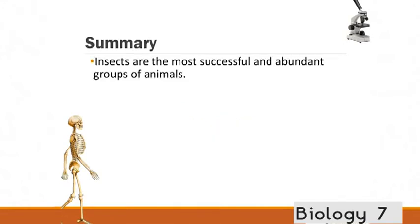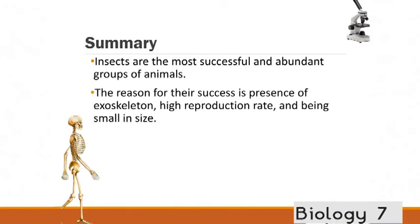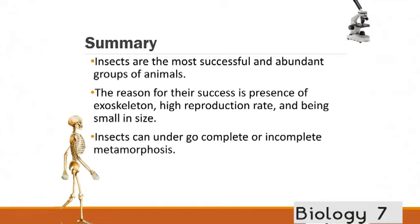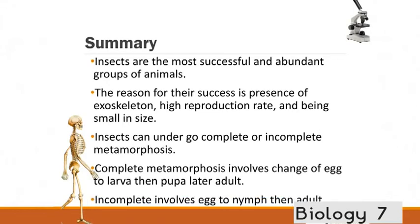So, in summary, insects are really, really successful. And they're everywhere. And one of the big reasons for their success is the presence of that exoskeleton. They're really fast at reproducing and being so small. And there's two different types of metamorphosis. Complete and incomplete. The complete involves a change of the egg to larva and then pupa before the adult. The incomplete involves the egg and you've got that little nymph before it turns into an adult.